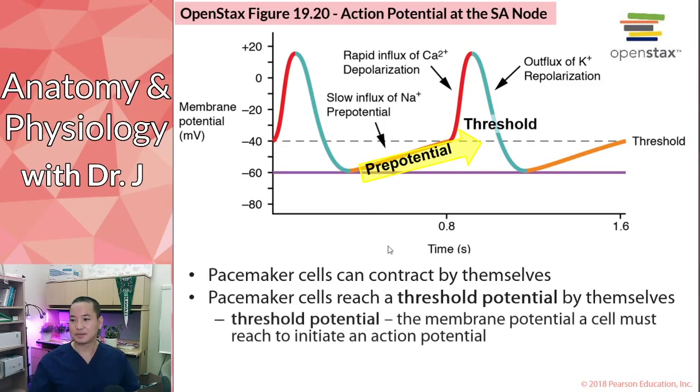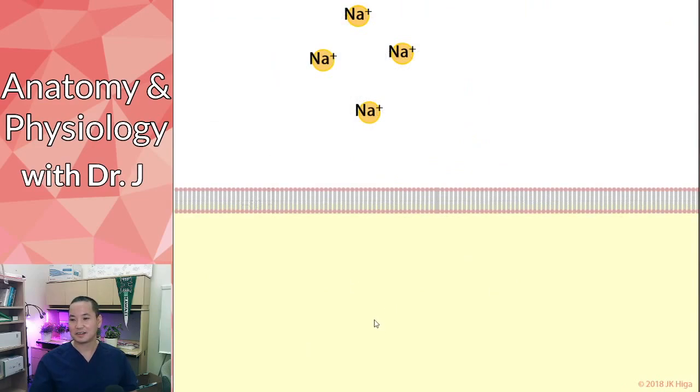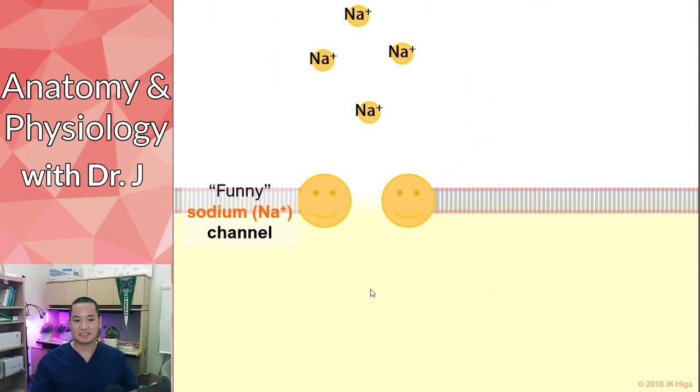So this is what we call a threshold potential. So again, it's like a hurdle you must reach before you can do this depolarization that starts off an action potential. Now, how do you do that? It's like, well, it can start itself, but how the frick does it start itself? Well, the cool thing is that you have these.